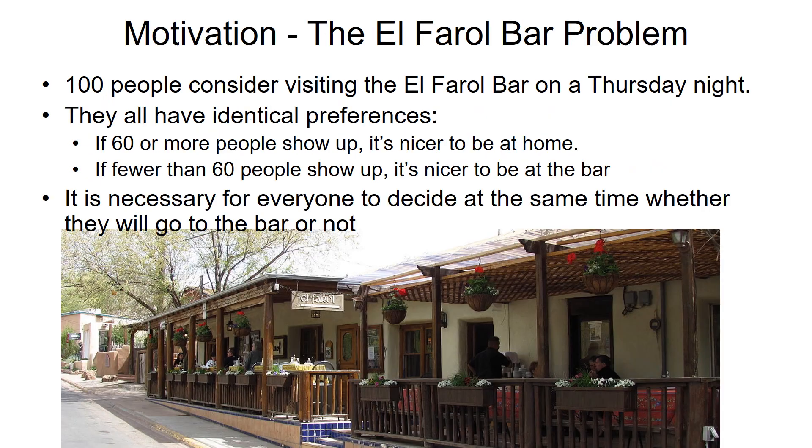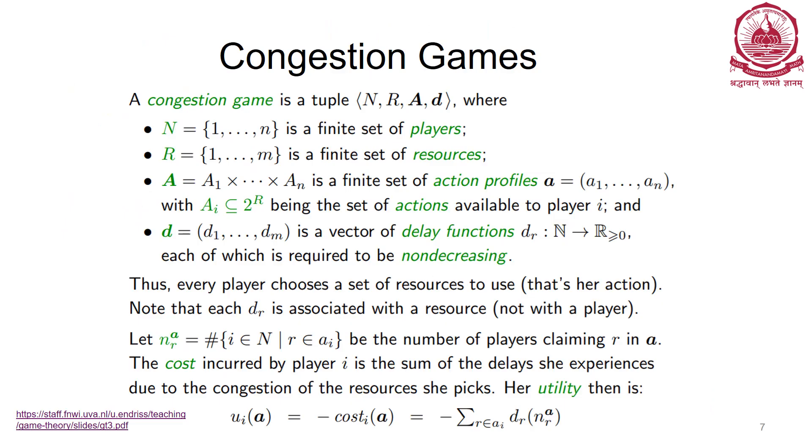Let's take another example, a very famous problem called the El Farol Bar problem. 100 people consider visiting the El Farol Bar on a Thursday night. They all have identical preferences: if 60 or more people show up, it's nicer to be at home because it is crowded there. If fewer than 60 people show up, it is nicer to be at the bar. It is necessary for everyone to decide at the same time whether they will go to the bar or not. So if you are a person, what will you decide?